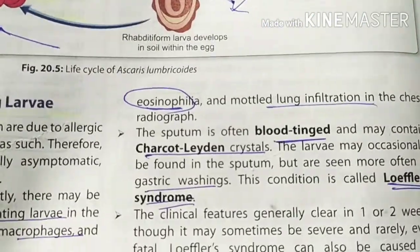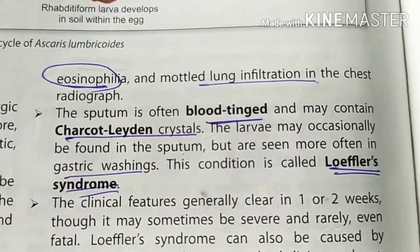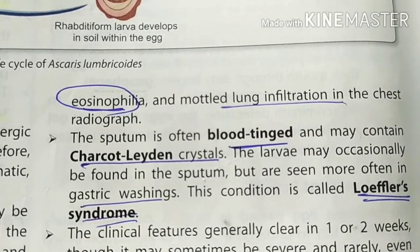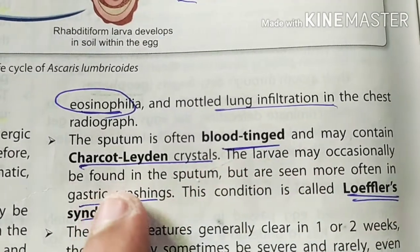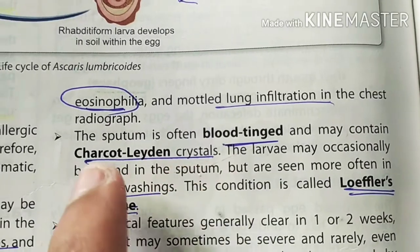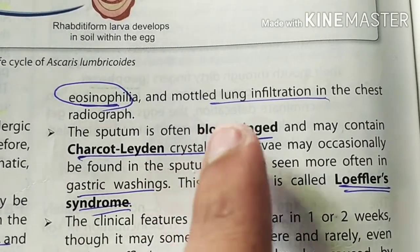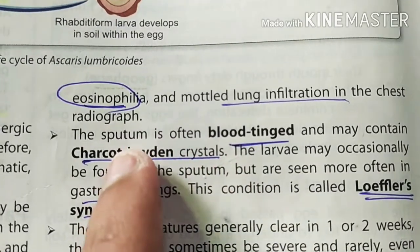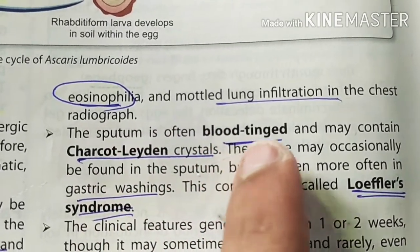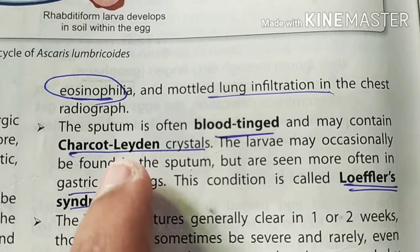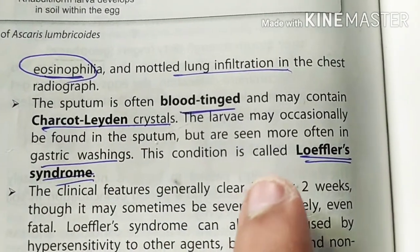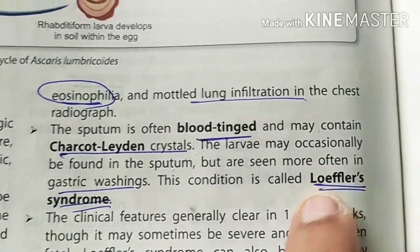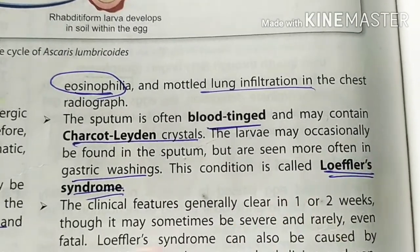Now let us learn about the symptoms caused by the larva. Remember Charcot-Leyden crystals — these are found in blood-tinged sputum. You can see the crystals known as Charcot-Leyden crystals, and this condition is known as Löffler syndrome.